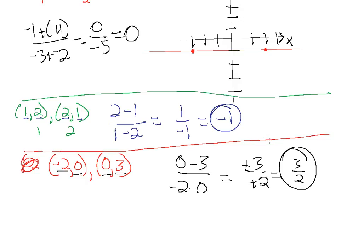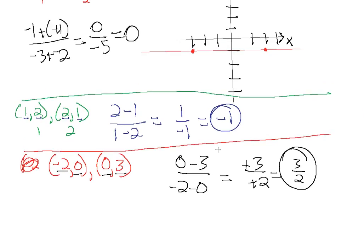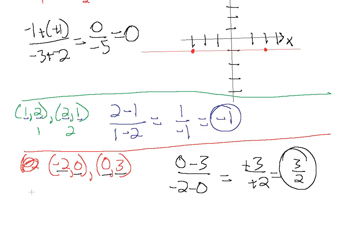Which means that for every three steps we move up in the y direction, we move two steps in the positive direction on the x-axis. So it's very intuitive. Slope is actually a lot easier to read once you just have a rational number here, because this is your rise and this is your run.